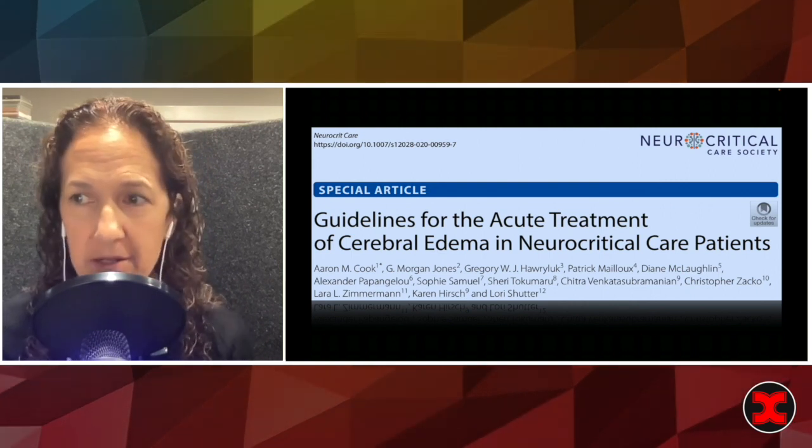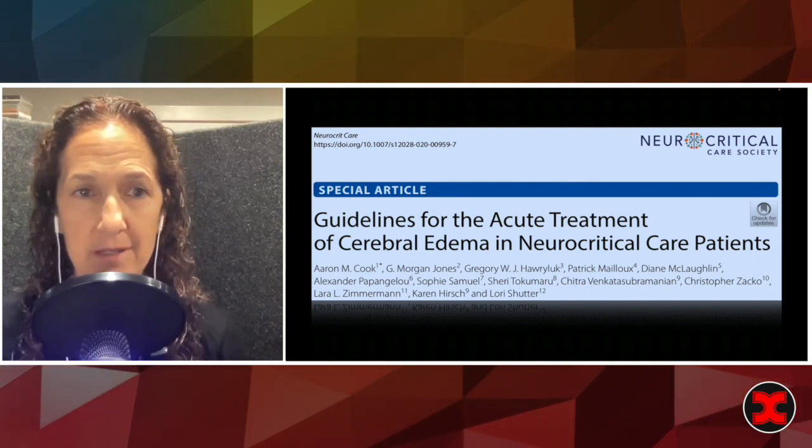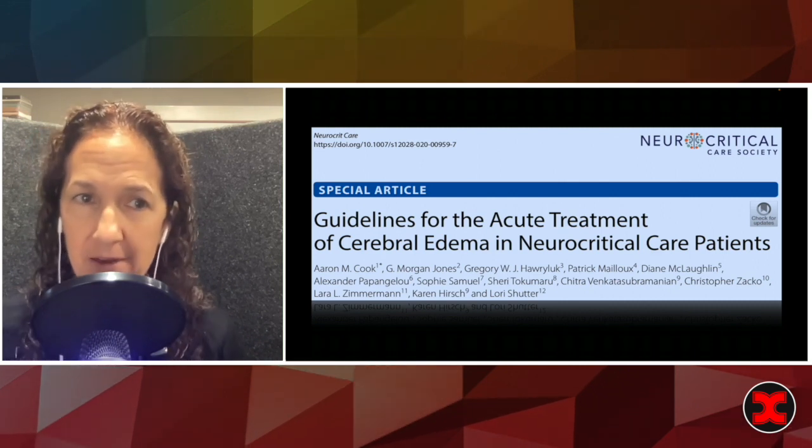But there's significant differences in the pathophysiology of many disease states. For instance, mannitol might be beneficial for TBI, but in subarachnoid hemorrhage it risks hypotension, hypovolemia, and that's bad for subarachnoid hemorrhage if you risk causing or allowing vasospasm.